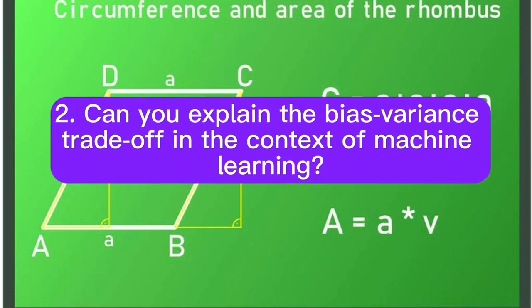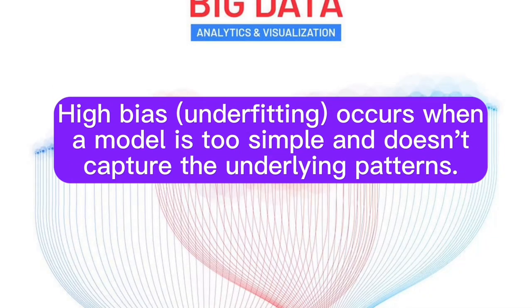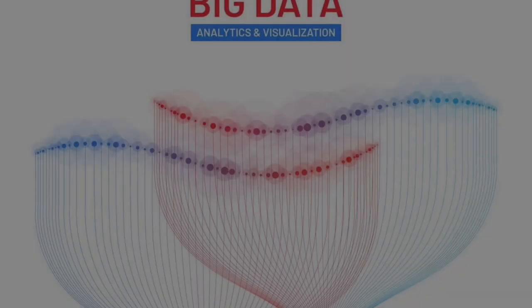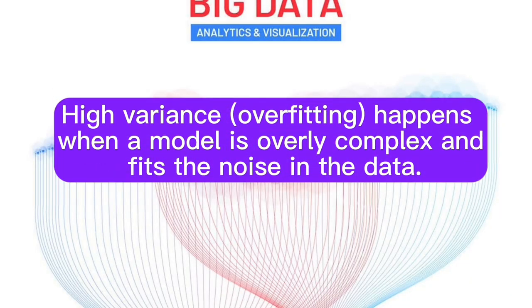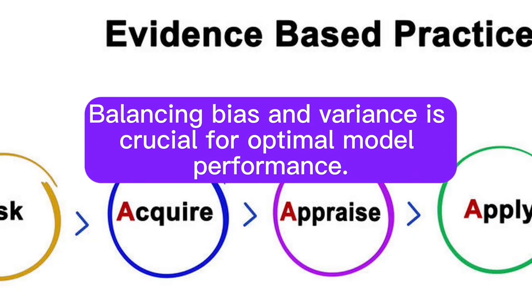Question 2: Can you explain the bias-variance trade-off in the context of machine learning? Answer: The bias-variance trade-off is a key concept. High-bias underfitting occurs when a model is too simple and doesn't capture the underlying patterns. High-variance overfitting happens when a model is overly complex and fits the noise in the data. Balancing bias and variance is crucial for optimal model performance.